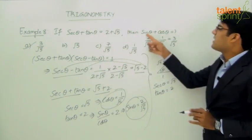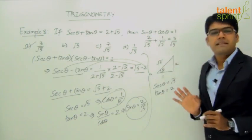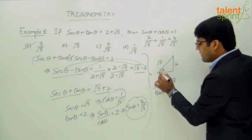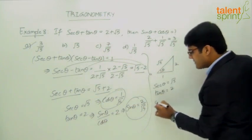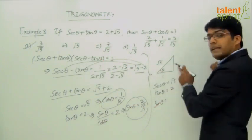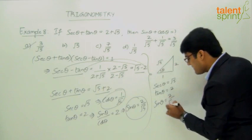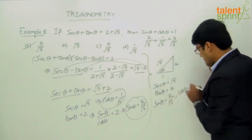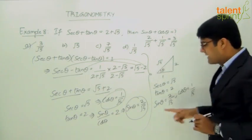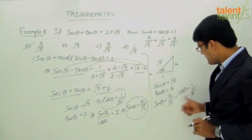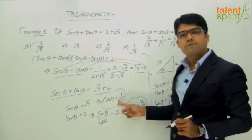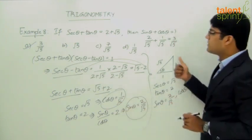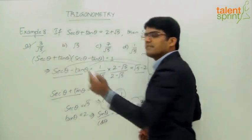From this right triangle, we can directly find sin theta and cos theta. Sin theta equals opposite by hypotenuse equals 2 by root 5, and cos theta equals adjacent by hypotenuse equals 1 by root 5. These are the same values as before, giving sin theta plus cos theta equals 3 by root 5, which is option A.